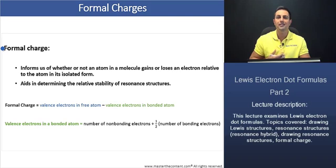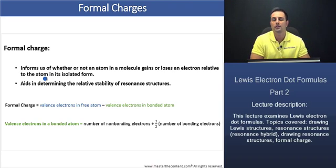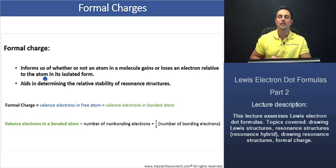Now, first, what does the formal charge tell us? The formal charge informs us of whether or not an atom in a molecule gains or loses an electron relative to the atom in its isolated form. For example, once you find the number of valence electrons in the atom in a molecule from the Lewis electron dot structure and compare that to the isolated form of the atom, if the valence electrons are not equivalent for the two atoms, then the atom in the molecule has either gained or lost electrons and is therefore said to have a formal charge. If the atom in the molecule gains electrons, it will have a negative formal charge. If it loses electrons, it will have a positive formal charge.